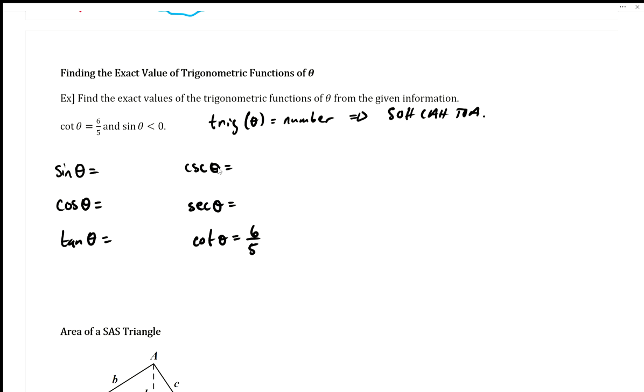The reason I wanted to get this table first is because I can do the reciprocal of that six fifths to get tangent. Tangent of theta is five over six, and that way I can use my TOA part for SOHCAHTOA.